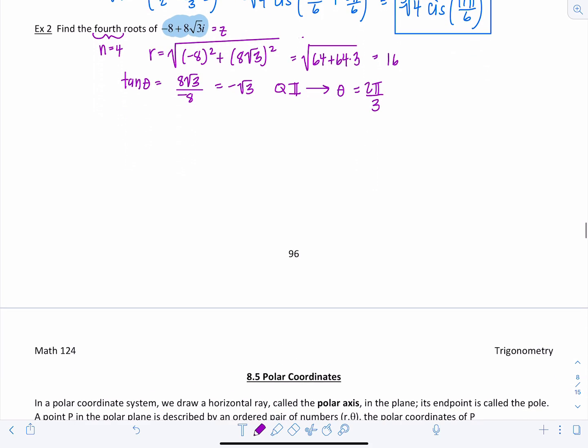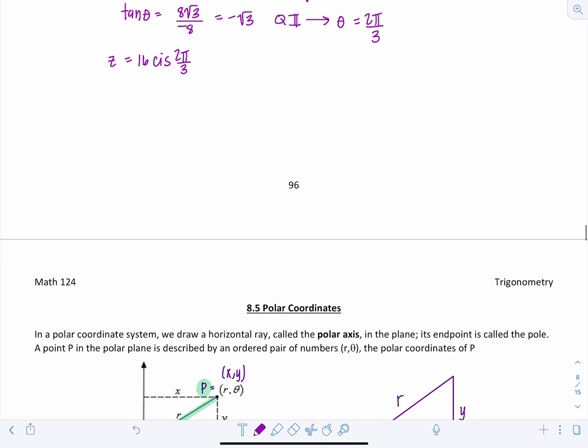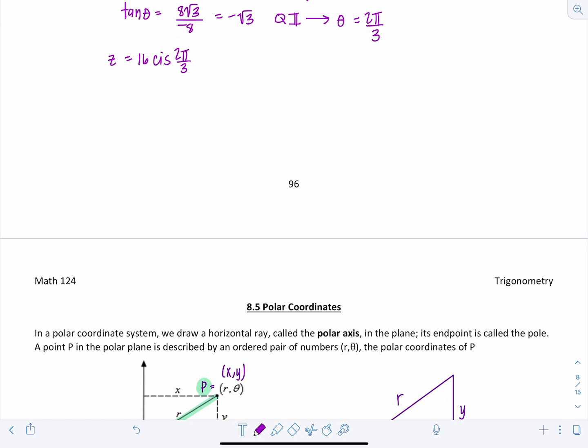Okay so now we have the trig form. So I can say z is equal to 16 cis 2 pi over 3. And then I want to find all of the fourth roots. So w sub k, it's going to be the fourth root of 16, cis, and then you take that angle 2 pi over 3 divided by 4 because you're finding the fourth roots, plus 2 pi k divided by 4. And then before you start plugging in the values of k you want to reduce all of this.